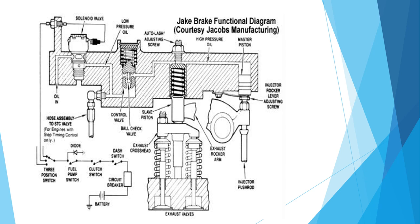To activate the Jake brake, four conditions must be met: the dash switch must be on, the clutch must be engaged, the throttle must be at idle, and the driver and/or cruise control must have activated the retarder. The engine RPM must be kept high for the most retarder effect. These are the working methods of the Jake brake functional diagram, or engine compression retarder.